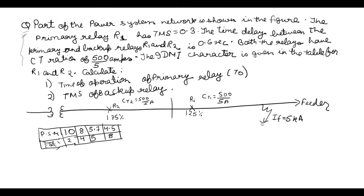Part of the power system network is shown in this figure. The primary relay R1 has TMS value 0.3. The time delay between R1 and R2, means primary and backup relay, TD is 0.6 second. Both of the relays have CT ratio as 500 to 5 amperes. The IDMT character is given in the table for R1 and R2. Now this was the character which we were unable to understand, and I will show you how to use this. You have to calculate the time of operation of primary relay T0 and TMS for backup relay.